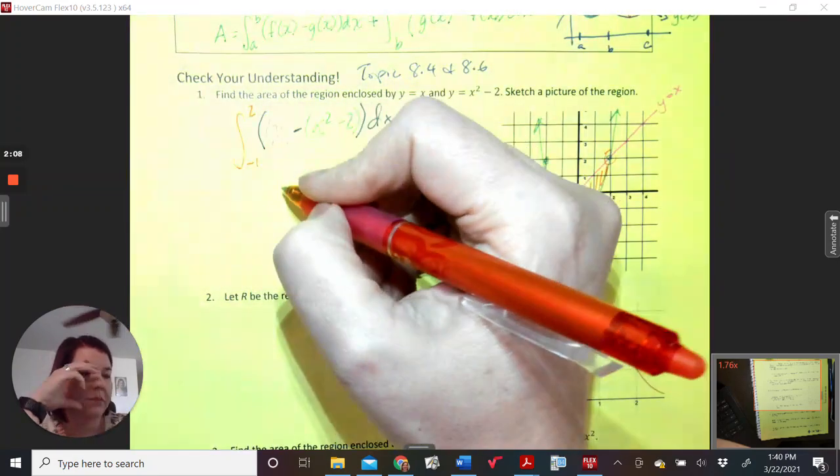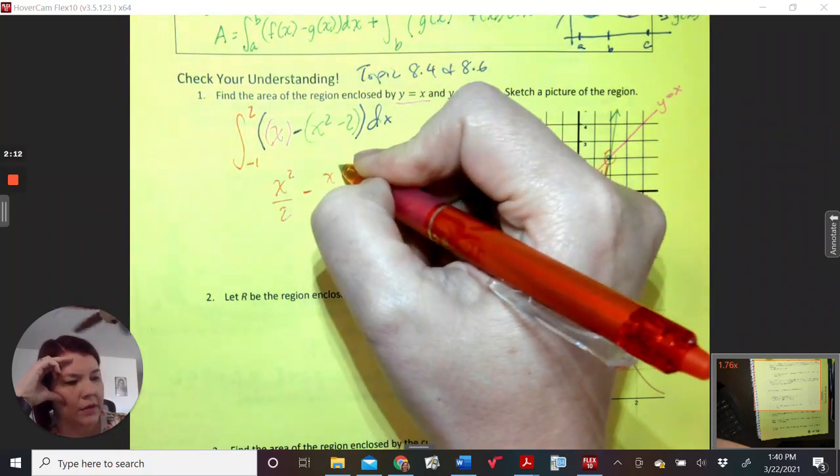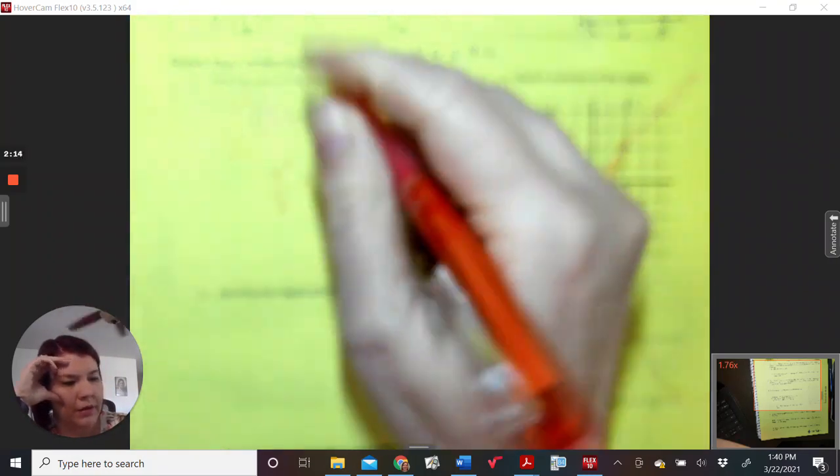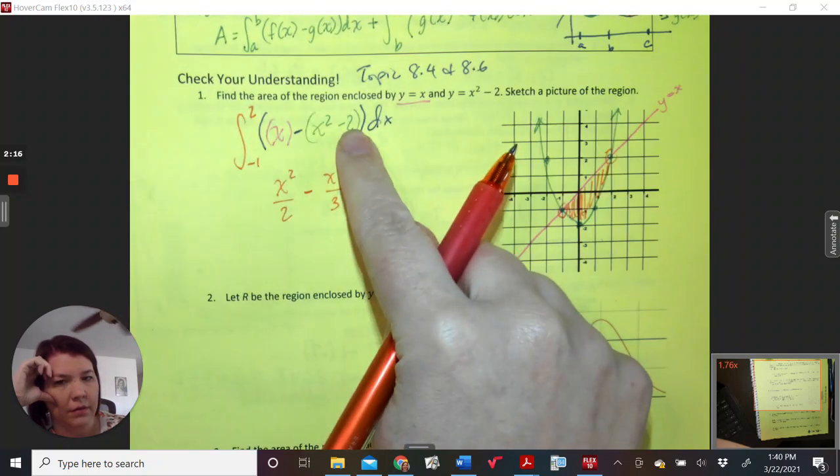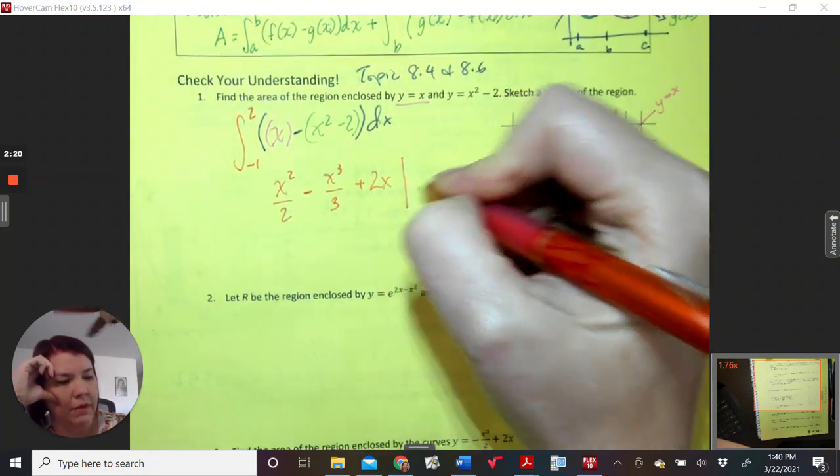Anti-derivative. x squared over 2 minus x cubed over 3 plus, distributing the minus sign here, plus 2x evaluated from negative 1 to 2.